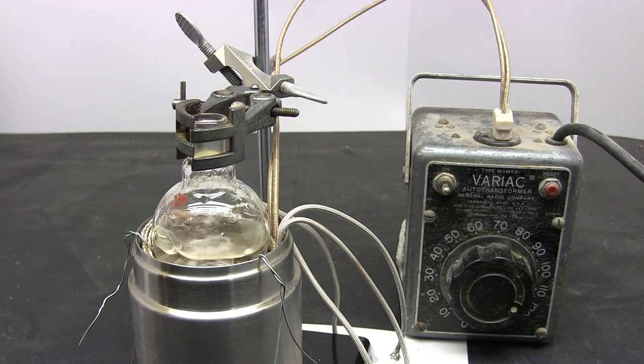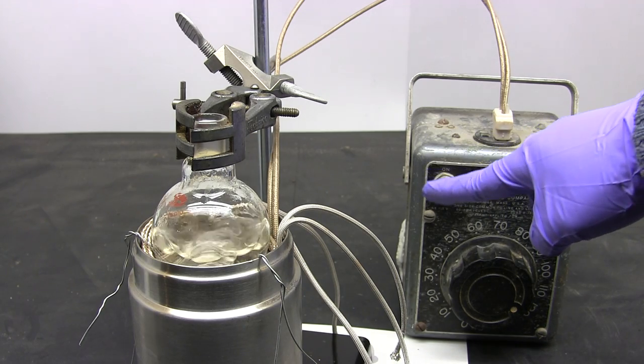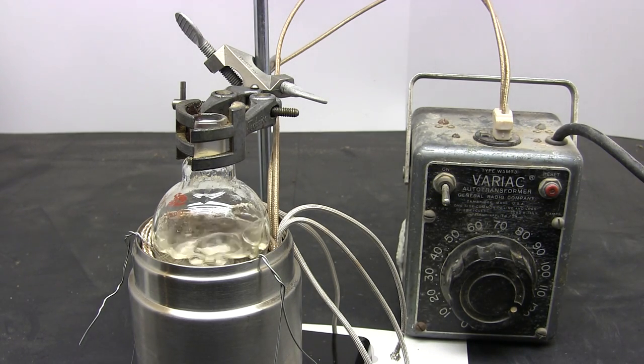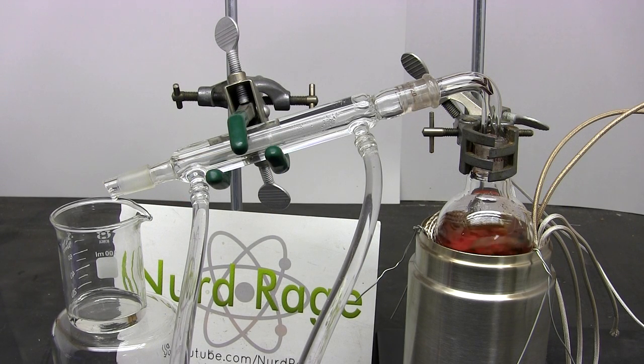And there we go, boiling water with our amateur heating mantle. Now of course boiling water is a trivial use. We're instead going to use this heating mantle in an upcoming video to distill sulfuric acid. So please subscribe, like and comment. Thanks for watching.